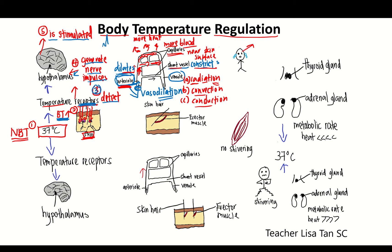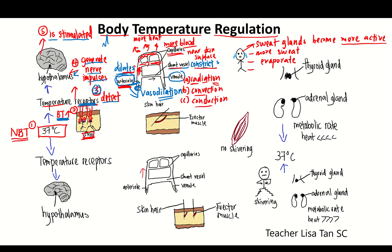Nerve impulses are also sent to the sweat glands. Sweat glands become more active, so more sweat will be produced and more sweat evaporates. When sweat changes from the liquid state to the vapor state, a lot of heat from our body is lost to the surroundings. More latent heat of vaporization is lost when you are hot.